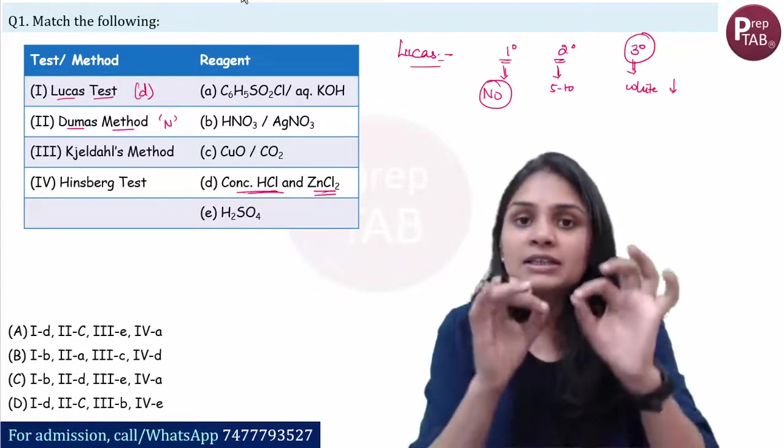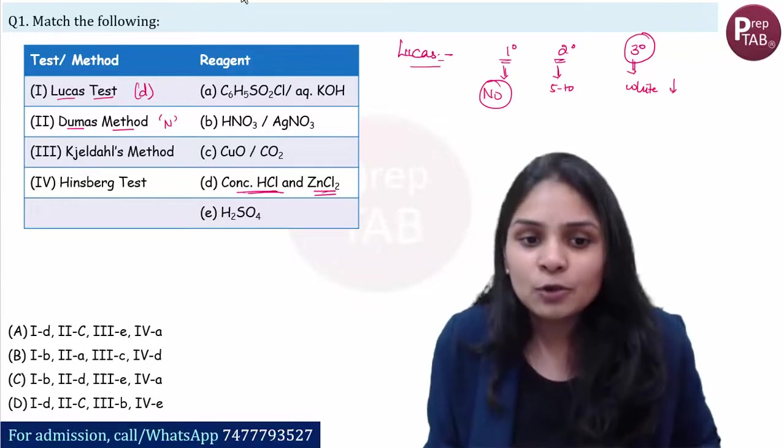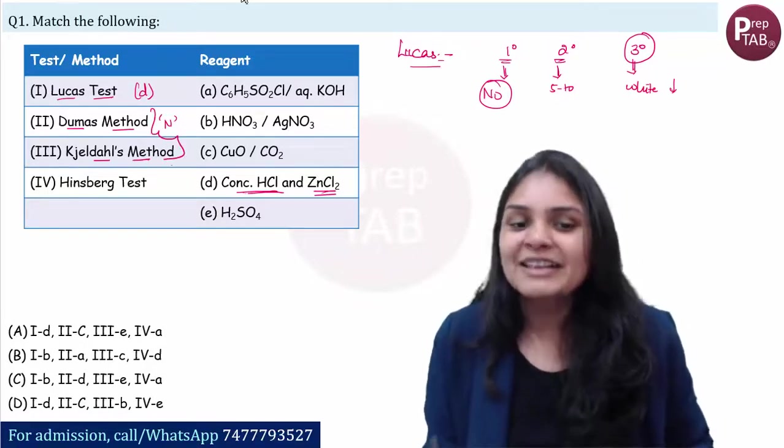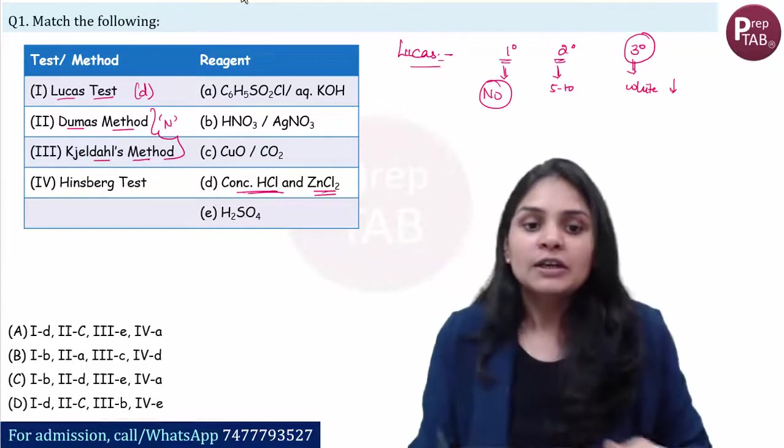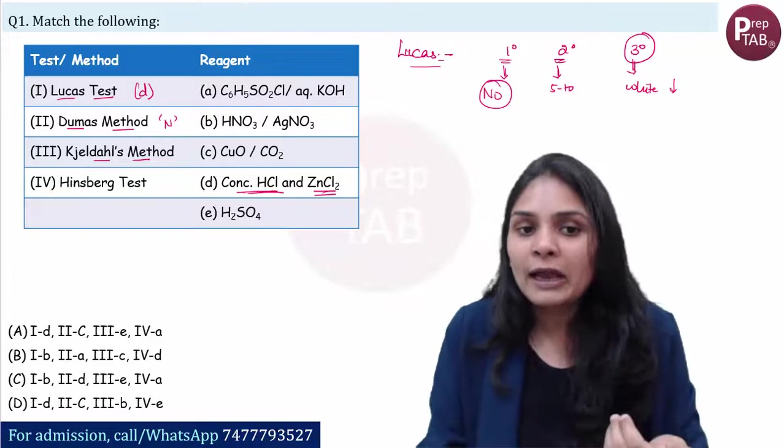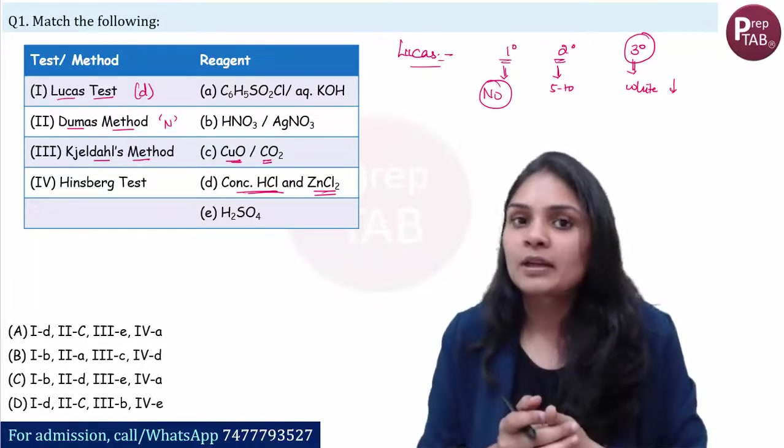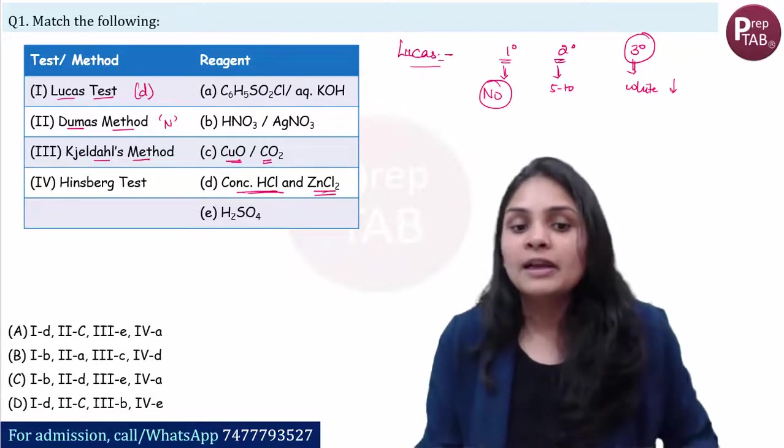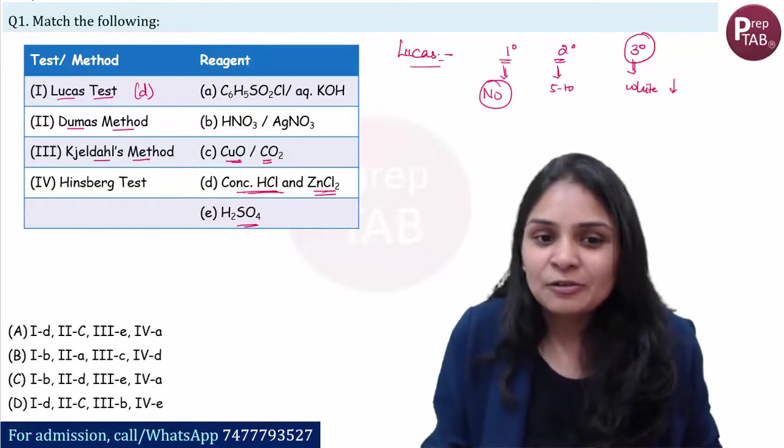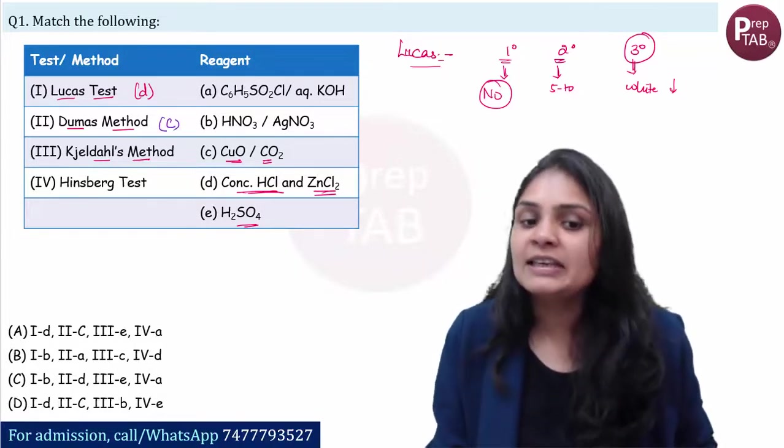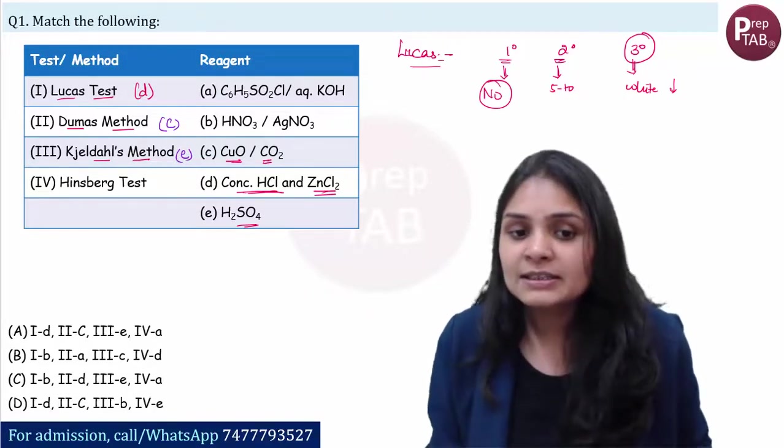Duma's method, this is a part of quantitative analysis here. Nitrogen, how much is in a molecule, we determine it. Same goes for Kjeldahl's method. Duma's method and Kjeldahl's method both are for determination of nitrogen. Duma's method we make N2 gas using copper oxide and CO2, and Kjeldahl's method uses H2SO4.